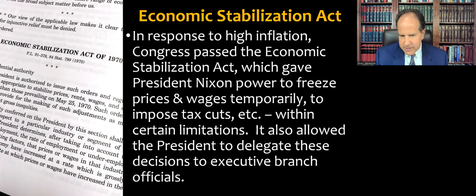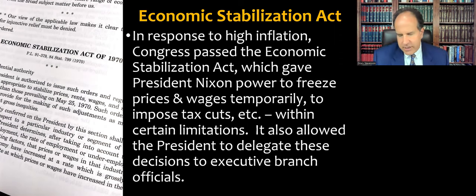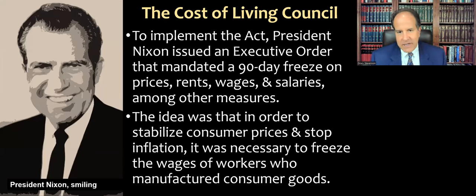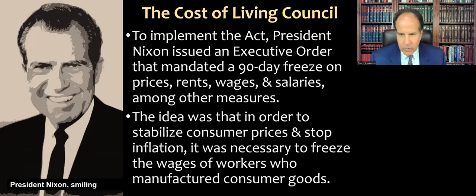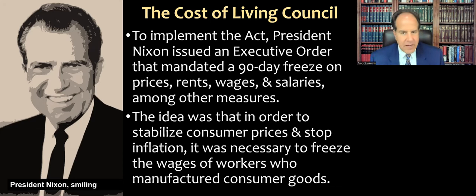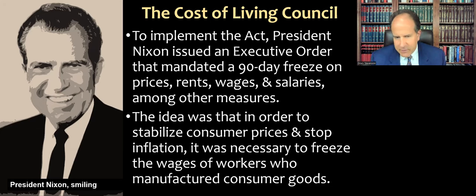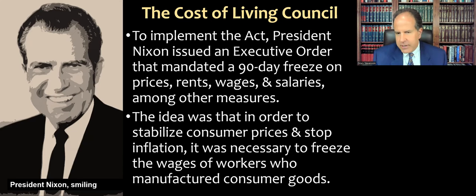The act allowed the president to delegate these decisions to executive branch officials, and it's clear Congress contemplated the president would set up a committee or agency to handle this. To implement the act, President Nixon issued an executive order that mandated a 90-day freeze on prices, rents, wages, and salaries, among other measures. Just as we had an eviction moratorium during the COVID crisis, the idea here was that stabilizing consumer prices and stopping inflation required freezing the wages of workers who manufactured consumer goods.